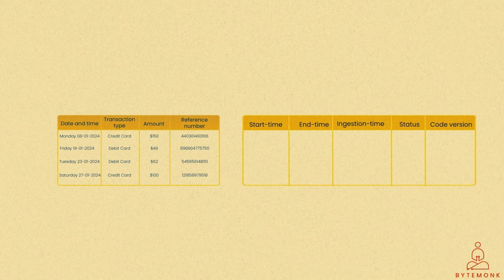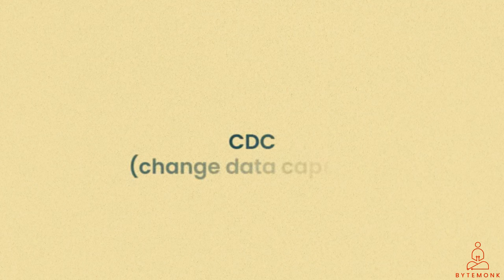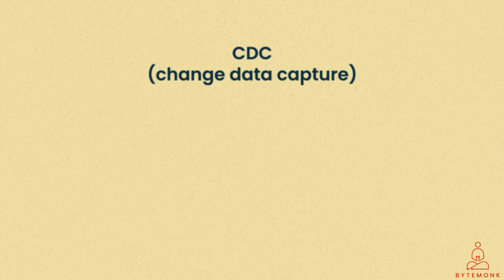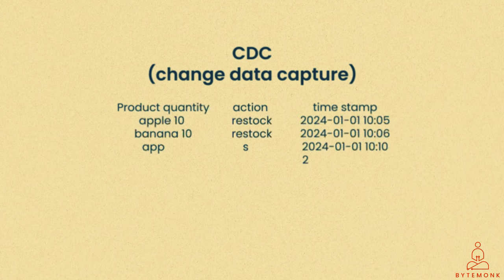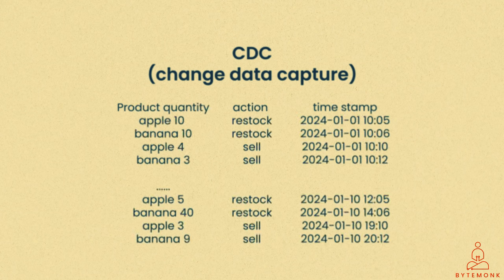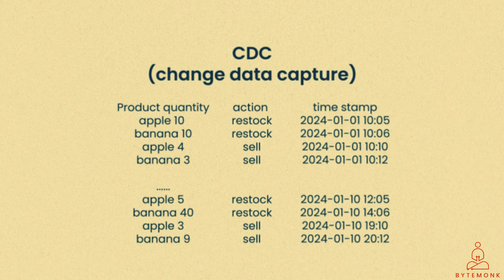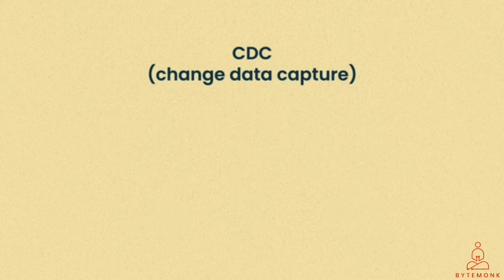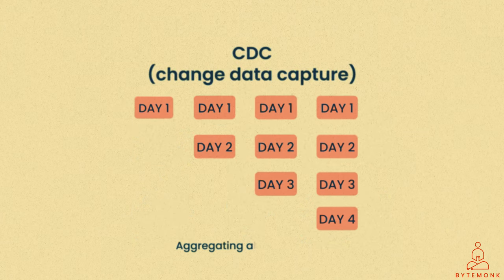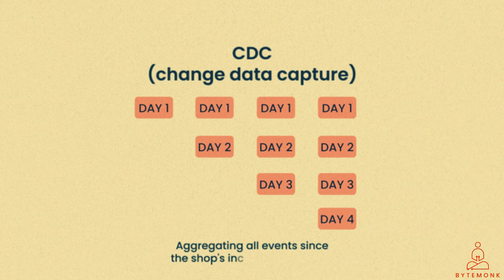Another prevalent use of batch processing is to handle a collection of CDC or change data capture events. For instance, let's consider a supermarket aiming to monitor the daily inventory status of all products, with the status source being a stream of restock and sell events. So, how do we tackle this? A straightforward solution might involve aggregating all events since the shop's inception every day.